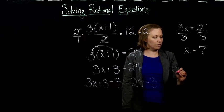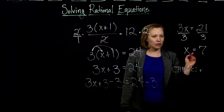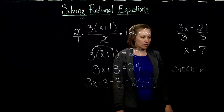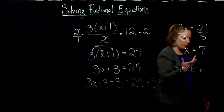And of course, as usual, the last step is always to check. I'm going to leave that to you. It does work. So that is solving 3 times x plus 1 over 2 equals 12. We get 7.